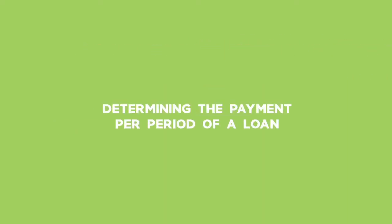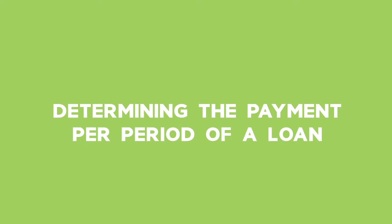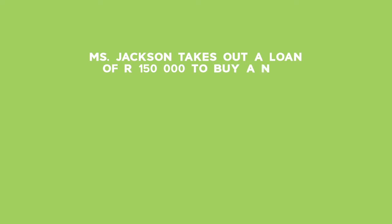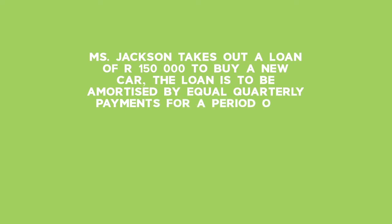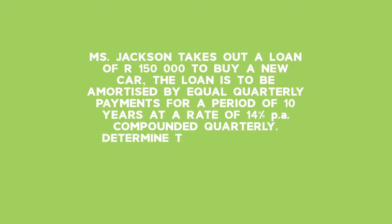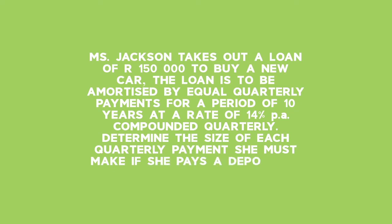Example 3: Determining the payment per period of a loan. Miss Jackson takes out a loan of R150,000 to buy a new car. The loan is to be amortised by equal quarterly payments for a period of 10 years at a rate of 14% per annum compounded quarterly. She pays a deposit of R15,000, so the loan amount will now be R135,000.